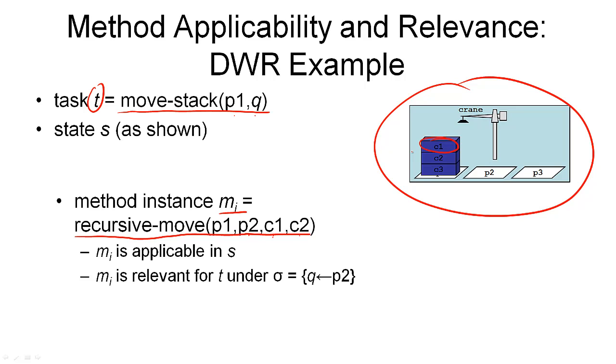And the other precondition was that the container c1 that we're moving is on top of c2. And again, you can see c2 is the second container here, so the second precondition is also satisfied. There were no negative preconditions, so we don't need to worry about those, which means our method m_i is applicable in the state shown here.